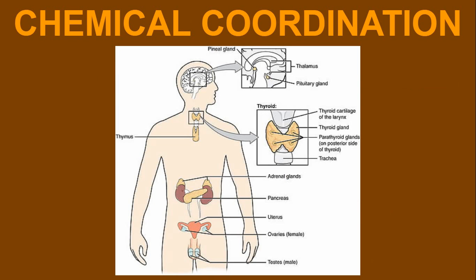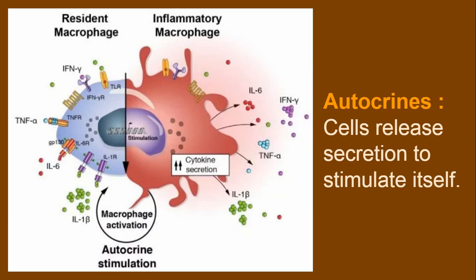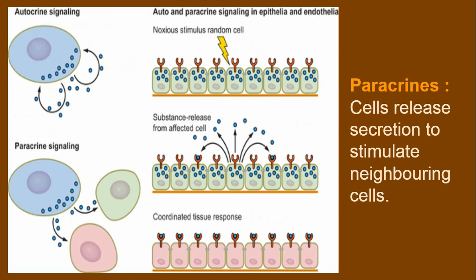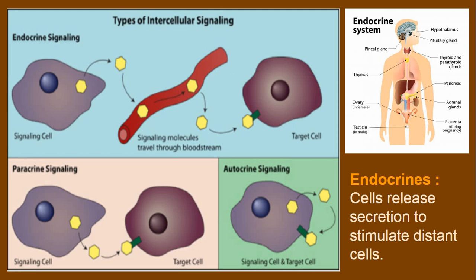Let's start from the first topic, chemical coordination. The autocrine type of signal is where a cell releases secretion to stimulate itself. The next type is paracrine, where the cell releases secretion to stimulate a neighboring cell.